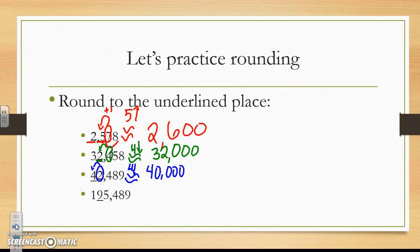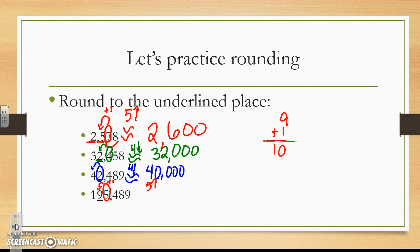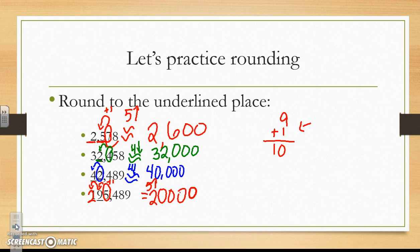Let's try one more together. I have the 9 underlined and it is in the ten thousands place. I am going to circle the number directly to the right. The 5 is 5 or higher, so I am going to add 1 to that 9. Well, 9 plus 1 gives me 10, so it is going to regroup and move over to the hundred thousands place. This becomes a 2 because 9 plus 1 is 10, and then the 9 becomes a 0 because I regrouped it. The rest from the 5 over become zeros. So 195,489 is approximately 200,000.